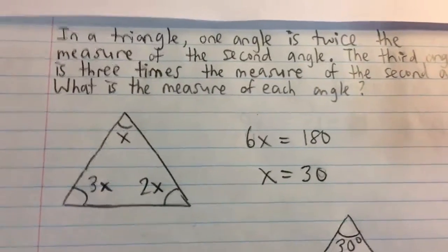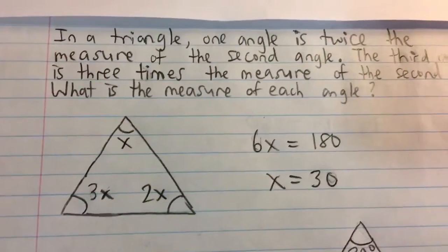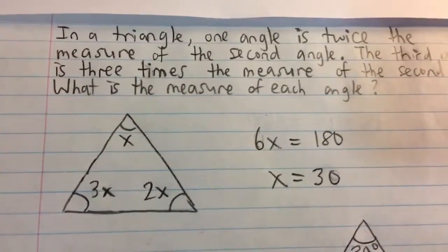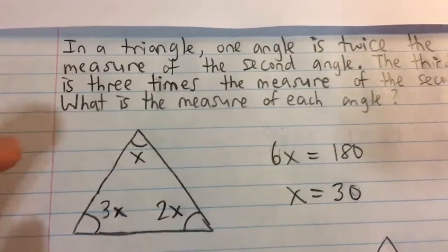We draw a triangle here, and first off it says that one angle is twice the measure of the second angle. If the second angle, we say, is labeled as x, its measure is x.